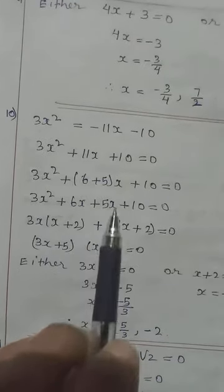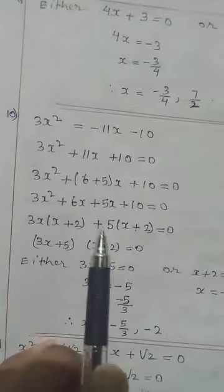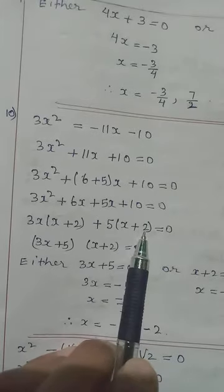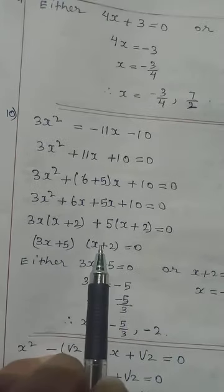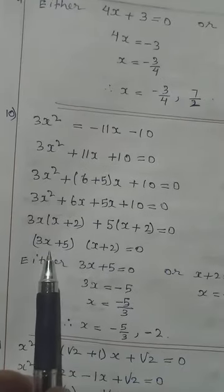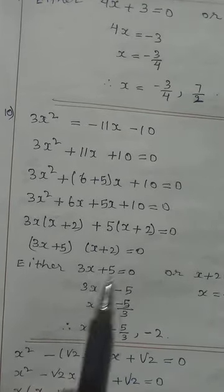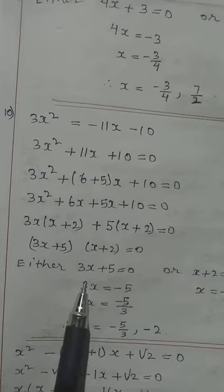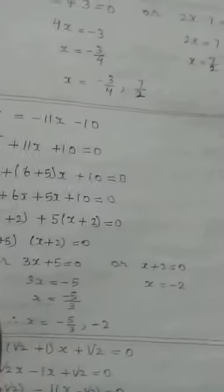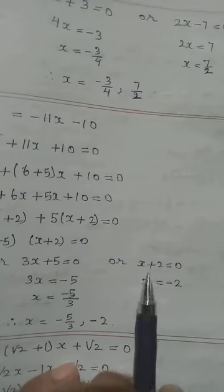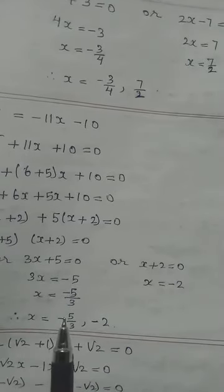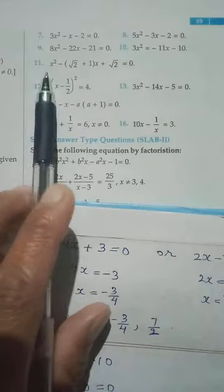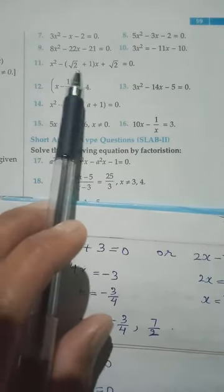For 5x plus 10, we take 5 common — 5 into 2 equals 10, so we get x plus 2. Both groups give the same bracket x plus 2, so we take that common: (x plus 2)(3x plus 5) equals 0. Setting each factor to zero: x plus 2 equals 0 gives x equals minus 2; 3x plus 5 equals 0 gives x equals minus 5 by 3. So the values of x are minus 5 by 3 and minus 2.